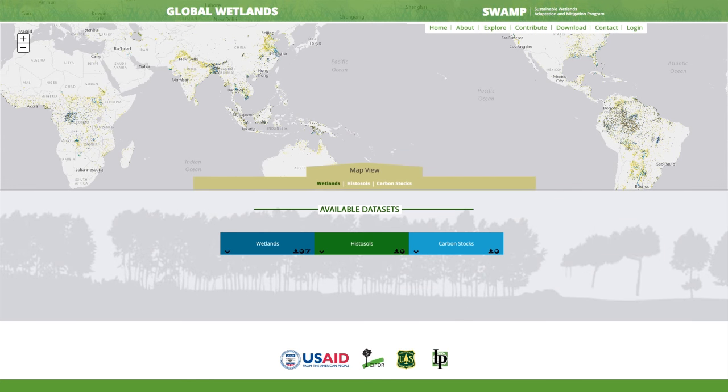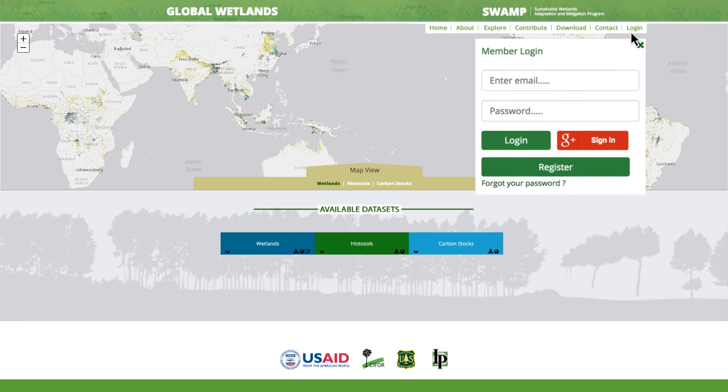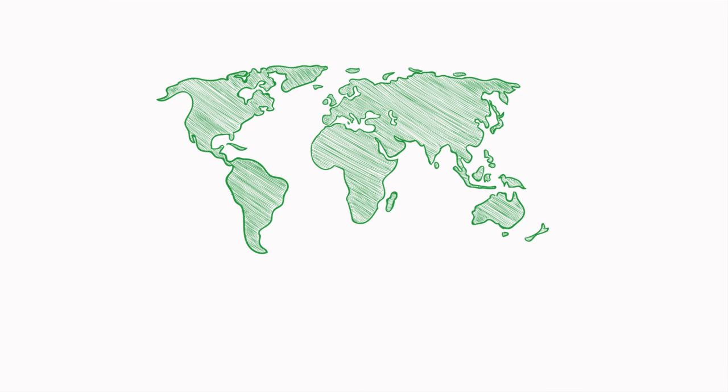To verify the map or add your own findings, become a member by simply clicking on the login tab at the top and clicking register. Join us to become part of a global research community. Your contributions could identify areas that hold carbon stocks and provide other essential services for climate change mitigation and adaptation.